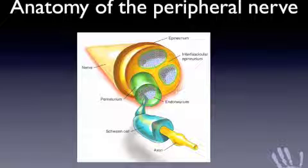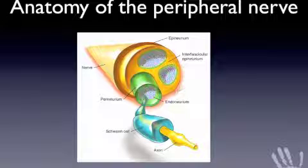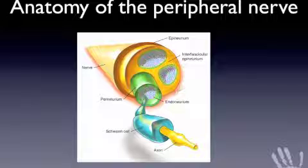When talking about the classification of a peripheral nerve injury we need to understand the microanatomy of the peripheral nerve. Each axon lies within an endoneural tube supported by Schwann cells. These individual axons are bound together into fascicle groups embedded within perineural tissue. Between the fascicle groups is interfascicular epineurium, and the whole lot is bundled together with an epineural layer. Superficially within the epineural layer are the longitudinal vascular structures that supply nutrition and oxygenation to the nerve.